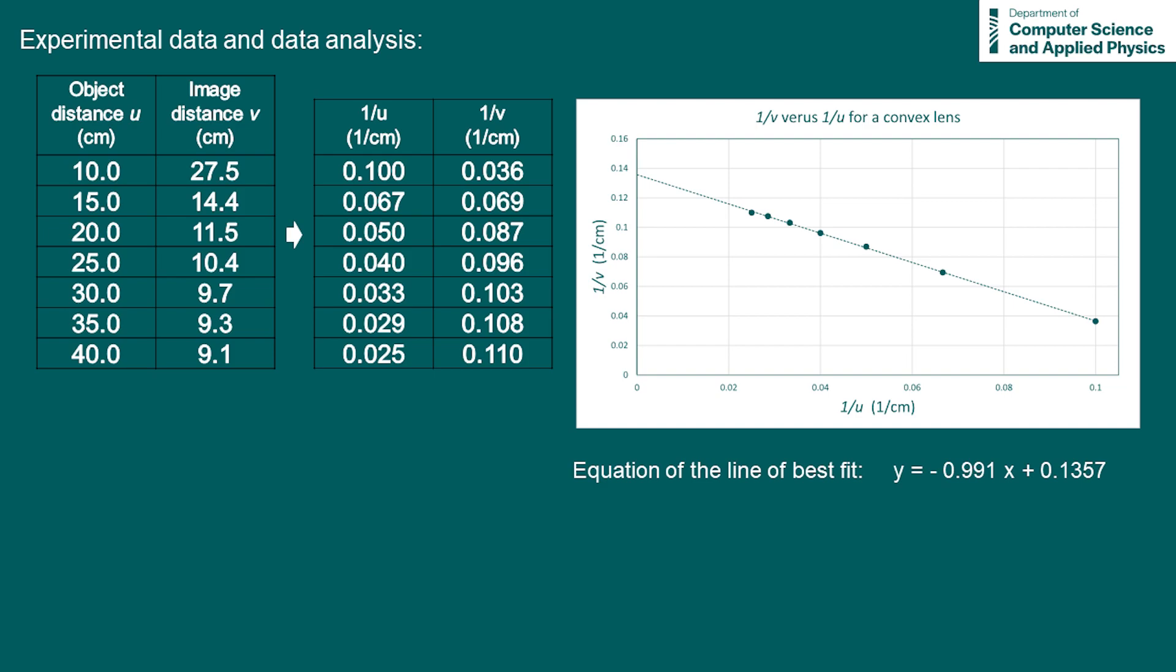For our data, the line of best fit was y equals minus 0.991x plus 0.1357. So the intercept of our line is 0.1357. This is actually equal to 1 over the focal length. So we could solve for the focal length and our value here would be 7.4cm.